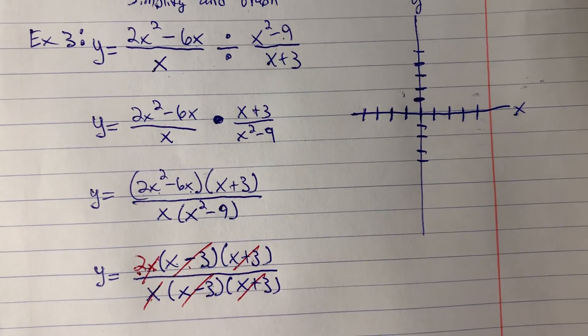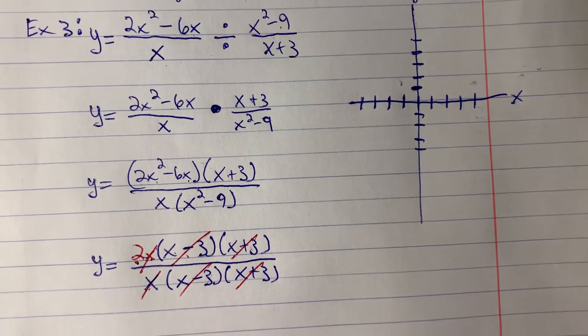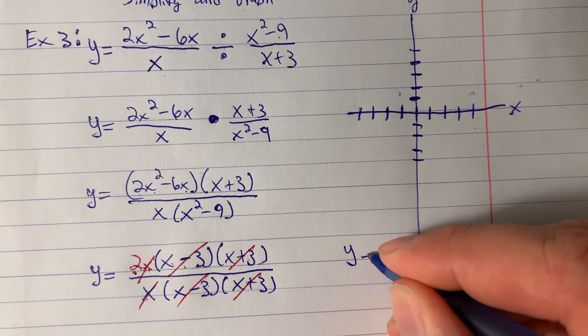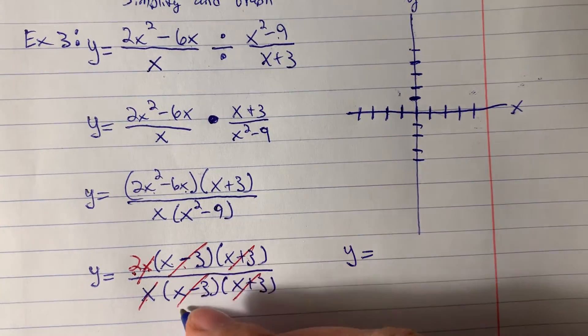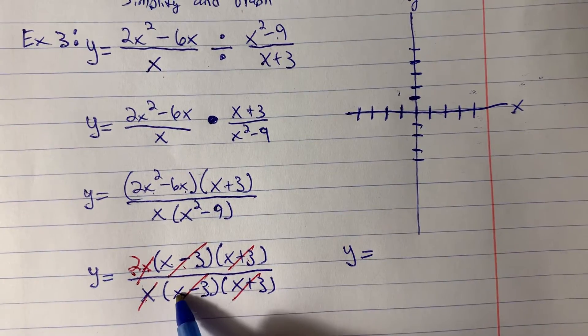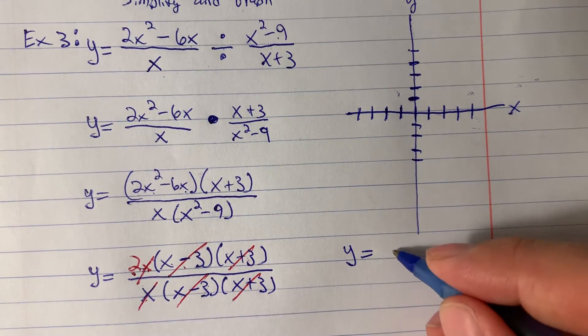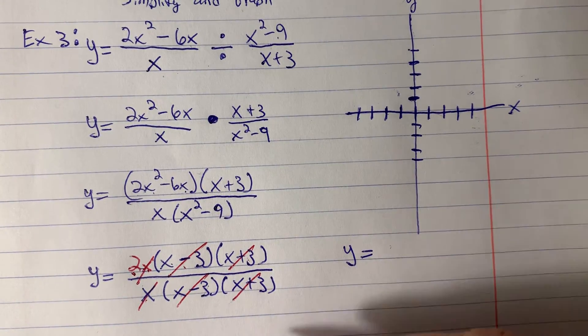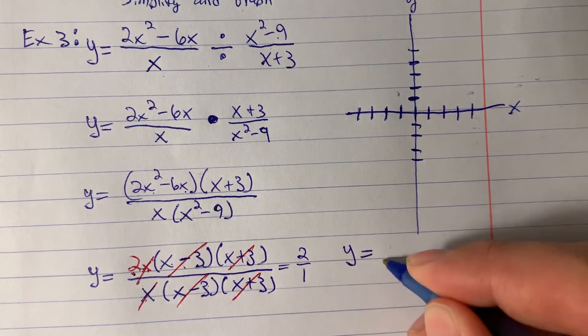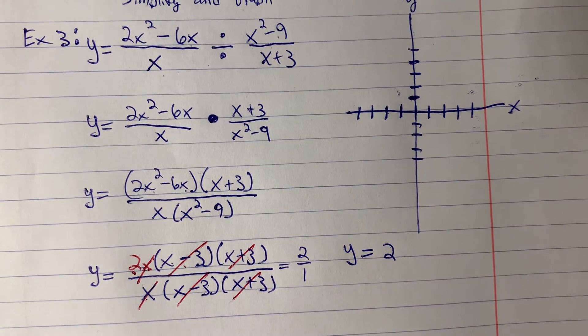And those are inverses. And so what we end up left with is y equals 2 divided by 1. If there's nothing left in the denominator, it's dividing by 1 and dividing by 1 doesn't do anything. So y equals 2.